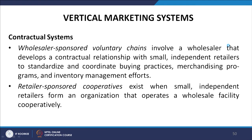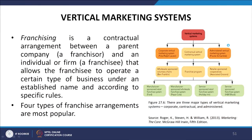Contractual systems are the most popular among the three types of vertical marketing systems. Wholesaler-sponsored voluntary chains involve a wholesaler that develops a contractual relationship with small independent retailers to standardize and coordinate buying practices, merchandising programs, and inventory management. Retailer-sponsored cooperatives exist when small independent retailers form an organization that operates a wholesale facility cooperatively. Franchising is a contractual arrangement between a parent company (the franchisor) and an individual or firm (the franchisee) that allows the franchisee to operate a certain type of business under an established name, system, and specific rules.